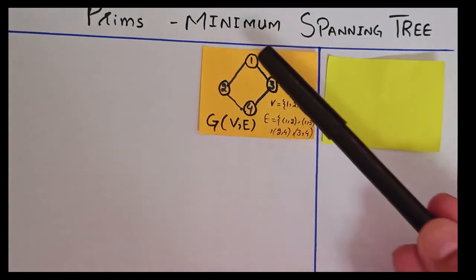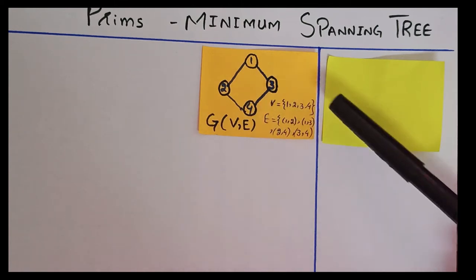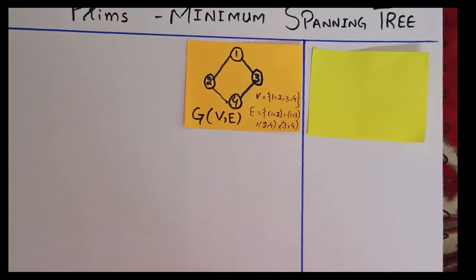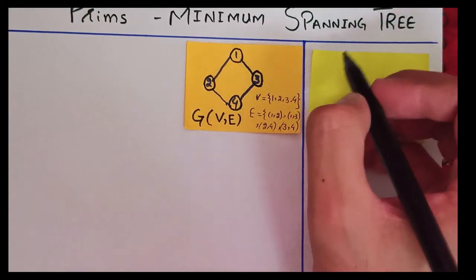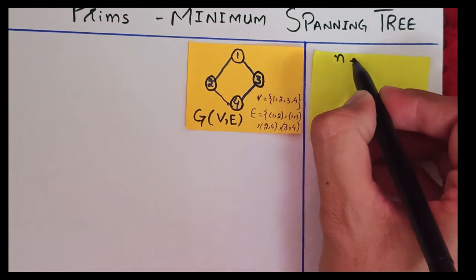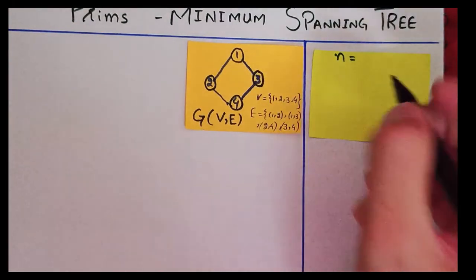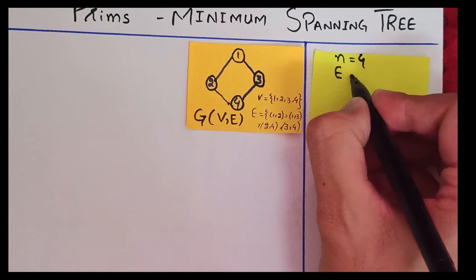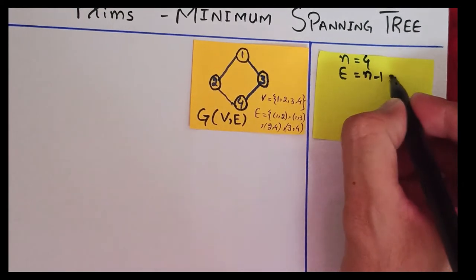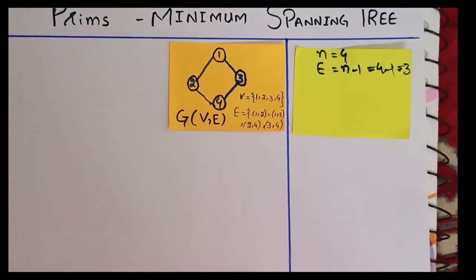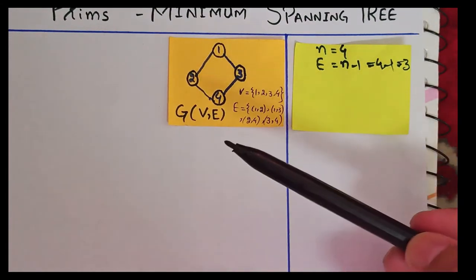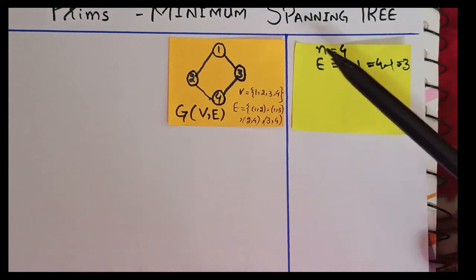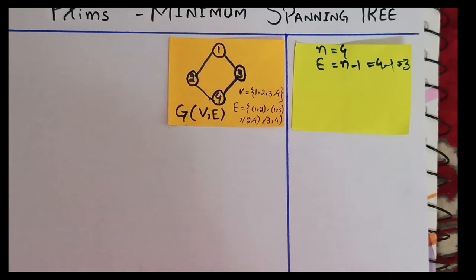The spanning tree will have all vertices — one, three, two, and four — four vertices. But the edges will be one less than the vertices. The number of vertices is denoted by n, and in this graph n equals four, so the spanning tree edges will be n minus one, which is four minus one, that is three. The spanning tree of this graph may have more than one possibility.